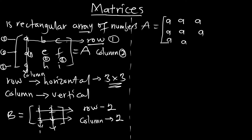Let's assume these are the members of the matrix. How do we identify them? By the row and the column. So this element is on row one, column one. This one is on row one, column two. This is on row one, column three. This element is on row two, column one. This is on row two, column two. This is on row two, column three. And this is on row three, column one; row three, column two; and row three, column three.